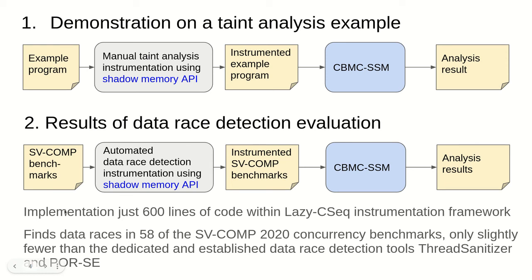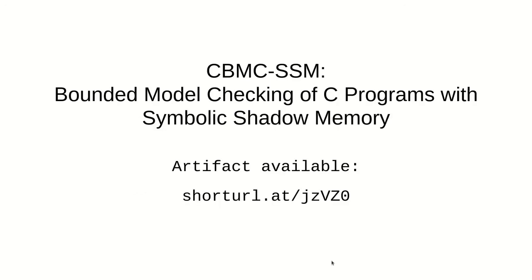We have also implemented a data race detection tool using CBMC SSM. The implementation of the tool is just 600 lines within the LASER CSEC instrumentation framework, which shows that a fairly complex analysis can be implemented rapidly. We evaluated our data race detector on the SV concurrency benchmarks, demonstrating that it is almost up to par with dedicated and established tools like ThreadSanitizer or PorSE. The benchmarks and full results of this evaluation are available for reproduction in our artifact, which you can download from this URL.